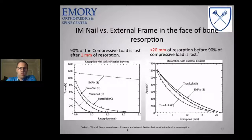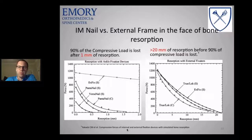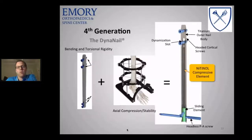There's still opportunity for improvement. Looking at IM nail versus a frame — the problem with some nails is understanding what happens with compression forces. A study by Yakikaki shows that when bone resorption occurs at the surfaces — which I've definitely seen in my patients — you lose compression across that joint, which may lead to loss of healing. An external fixator prevents that, maintaining significant compression even out to 20 millimeters of resorption. The question is: can we get those gains without the associated issues of an external fixator?